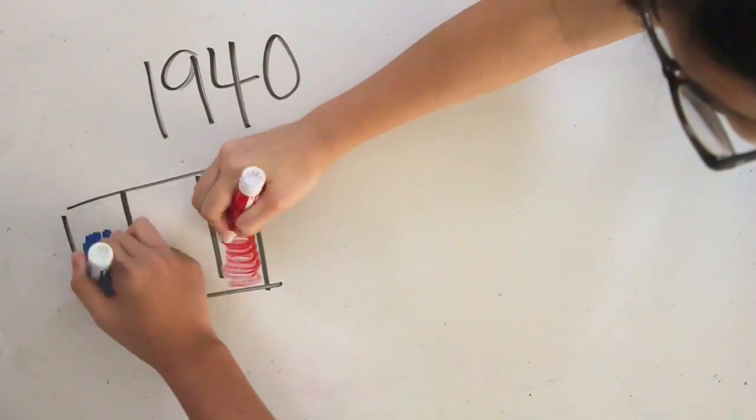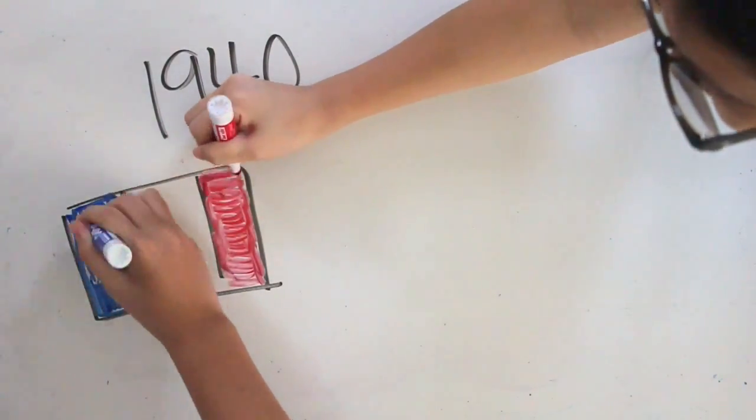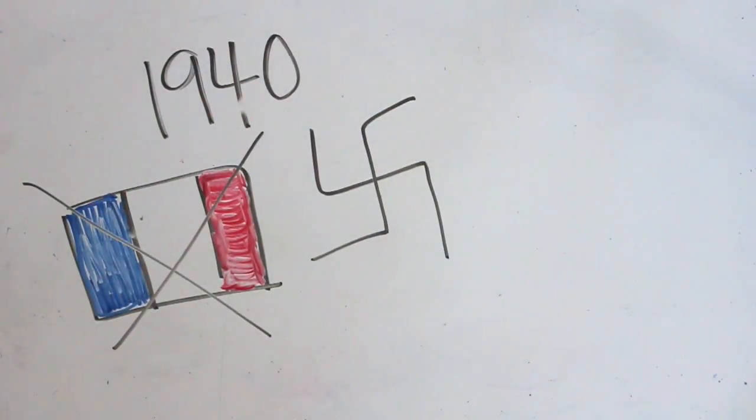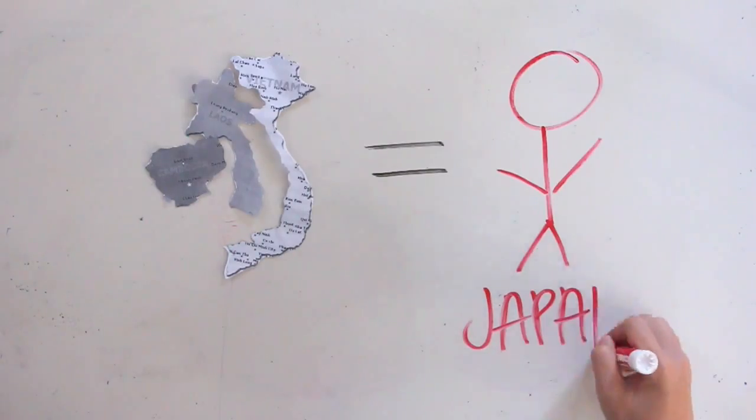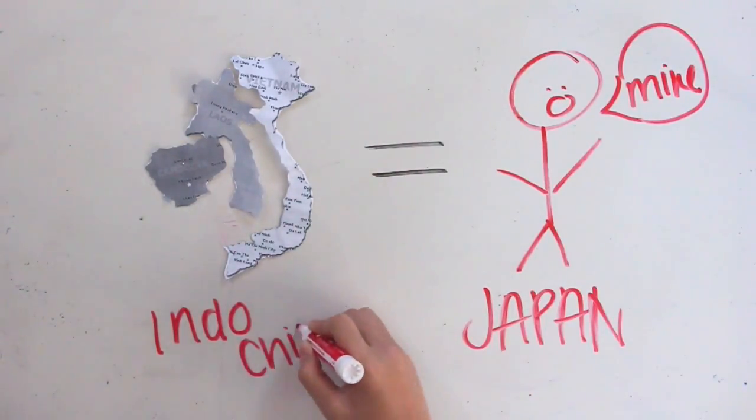In 1940, during World War II, France fell under Nazi Germany. Japan took advantage of the French's weakness and invaded and occupied the French Indochina colony, which included Cambodia.